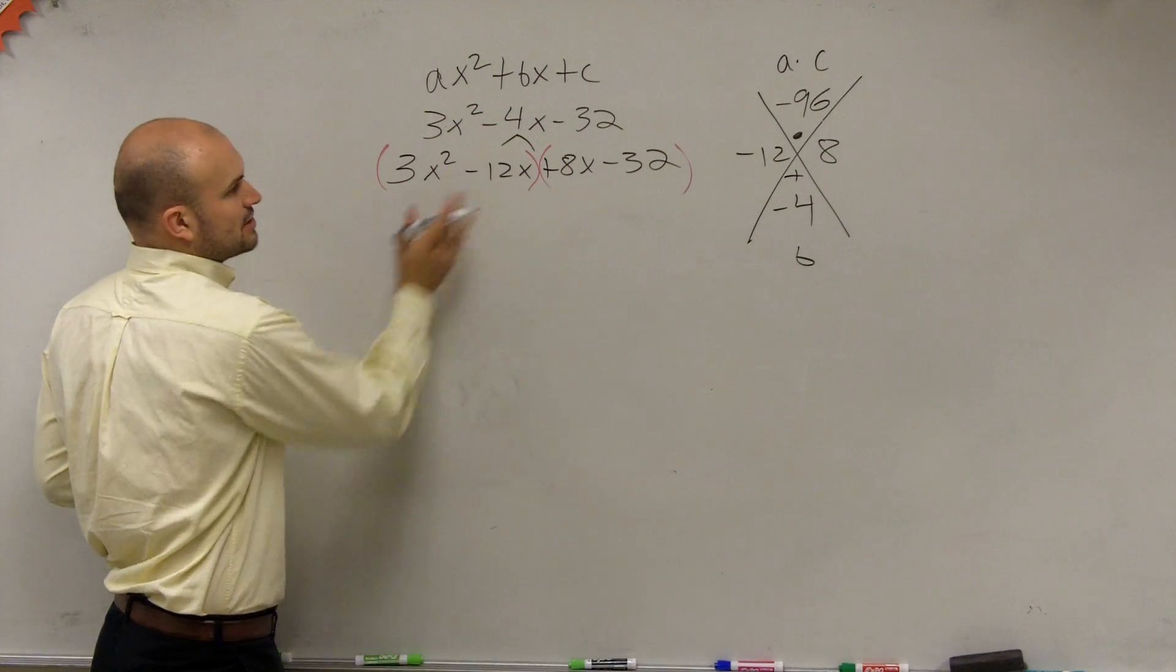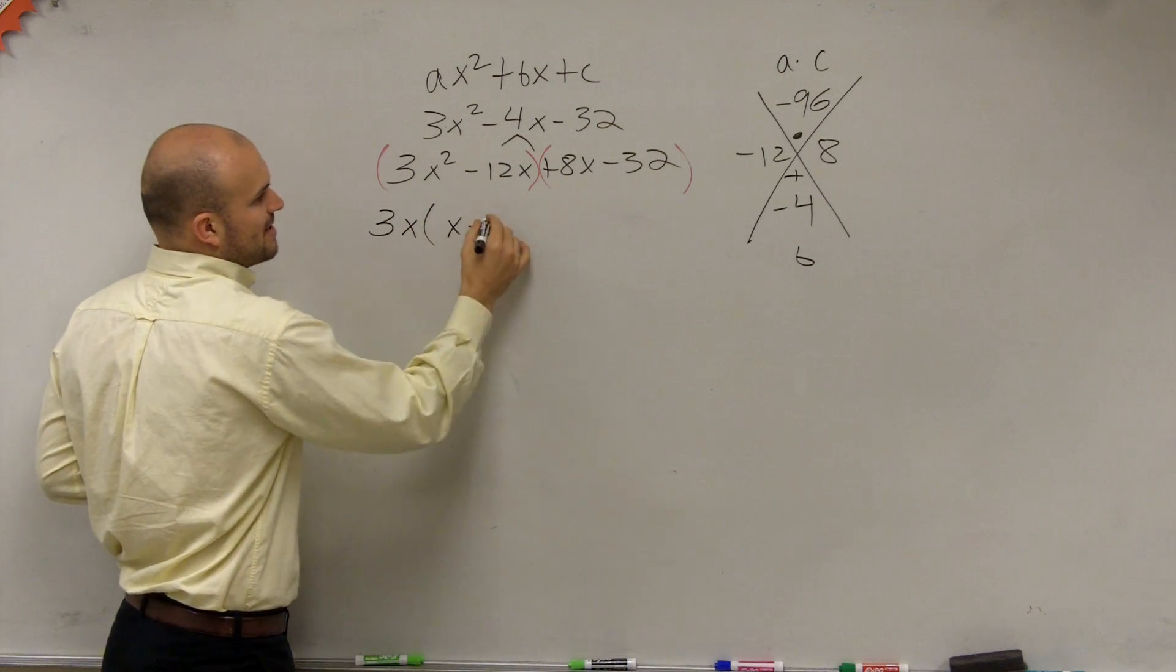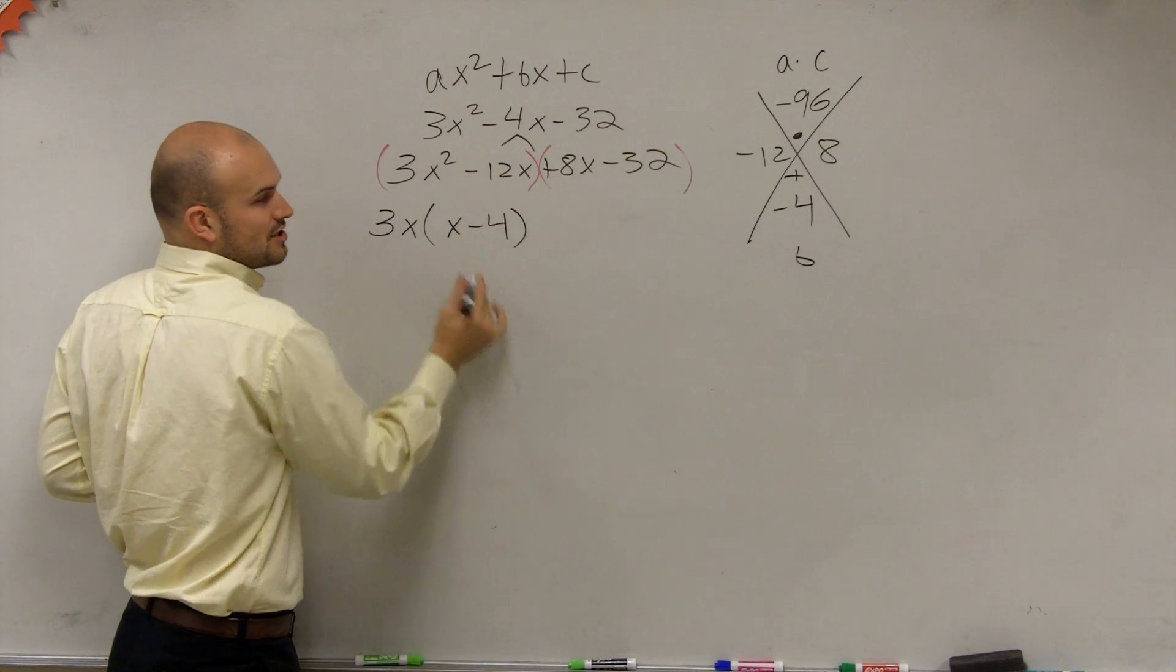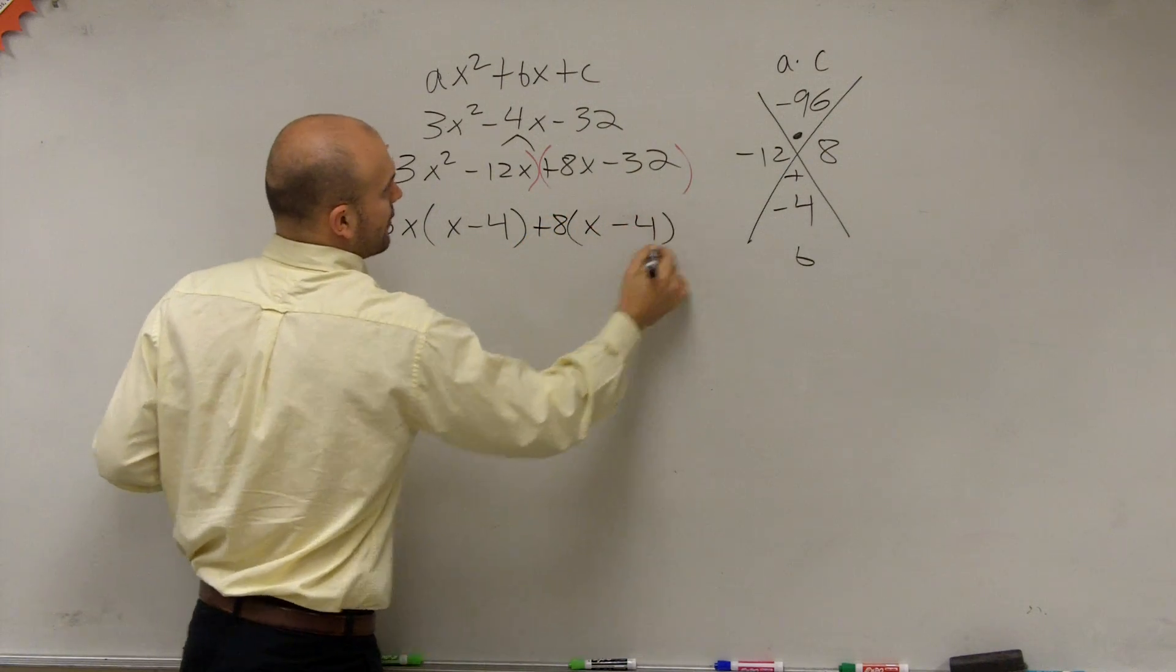So now I factor out the first two terms. I can factor out a 3x, and that's going to leave me with an x minus 4. Out of these two terms, I can factor out a positive 8, and that's going to leave me with an x minus 4.